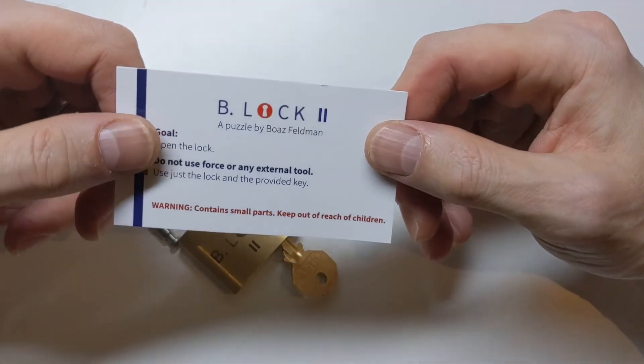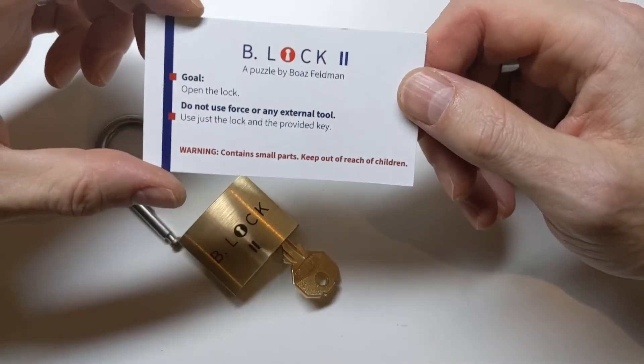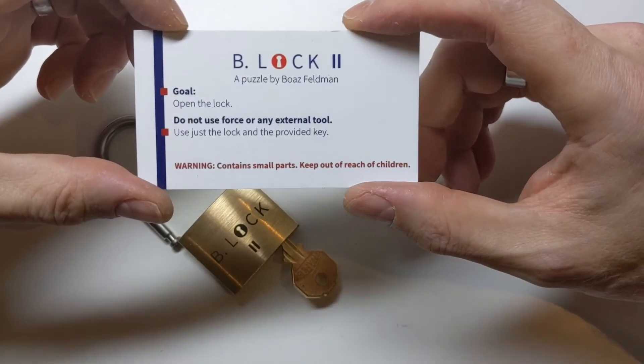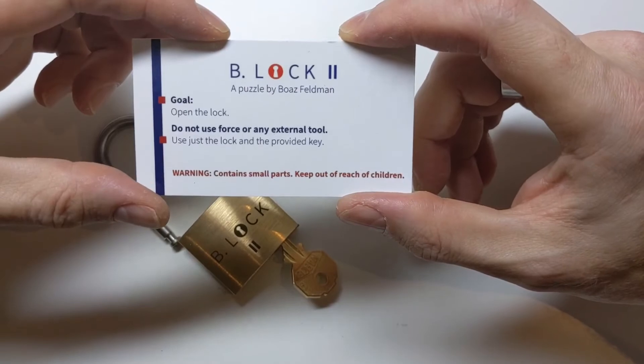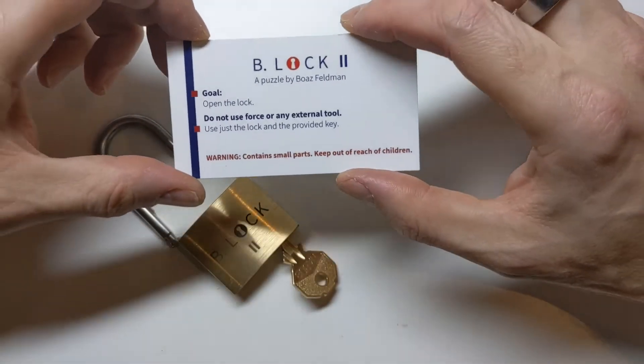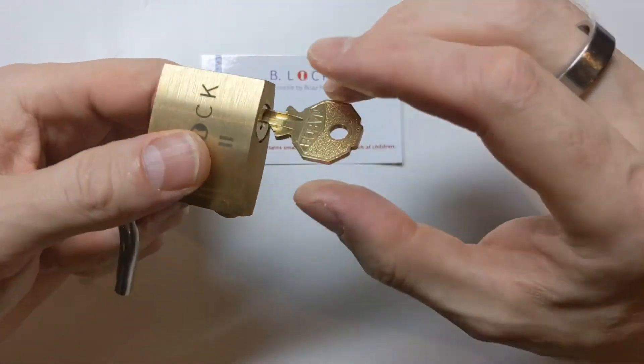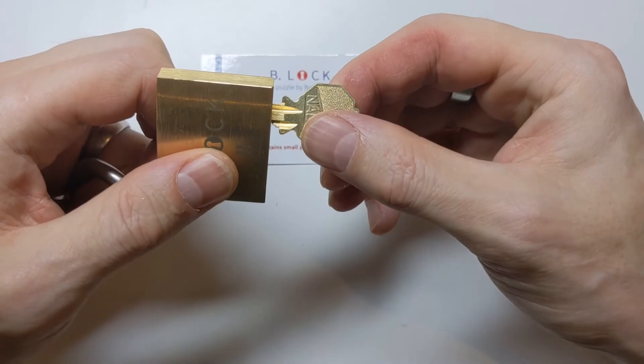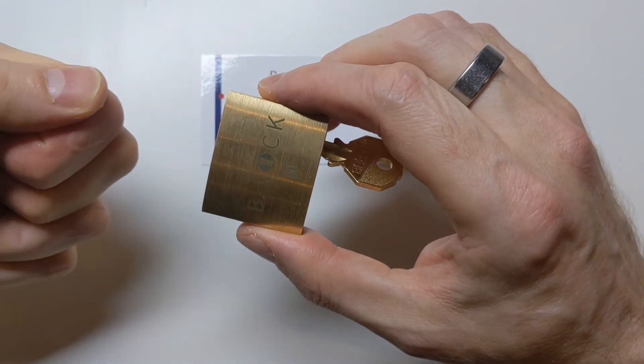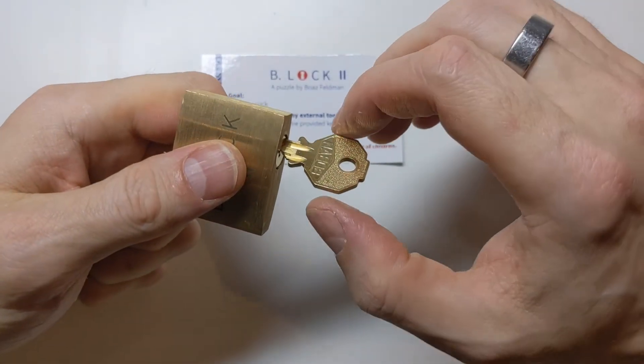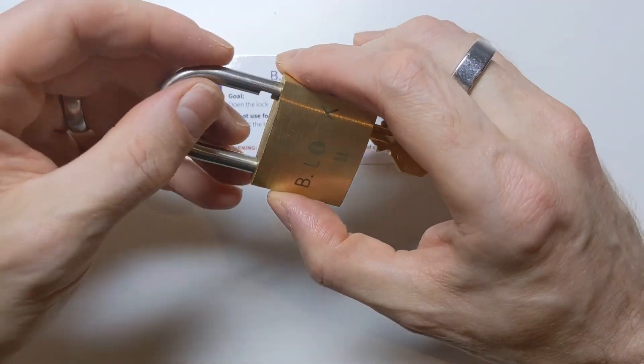So there we go. That was the B-Lock 2 puzzle by Boaz Feldman. That was really good fun. I enjoyed that a lot. It was one of those puzzles where there just was no obvious way to get into it. There was no logical path. It wasn't like I did step one and then did step two and then did step three. There's a slight progression because you do feel something happening as you pull the shackle out. And then as you push the shackle back in, you definitely feel some tension on the key. And you can tell it wants to turn. But it was pretty subtle.